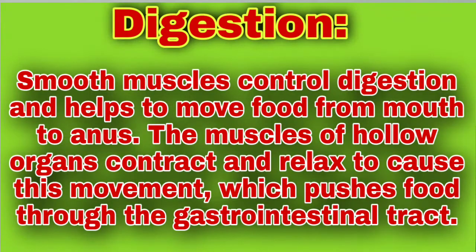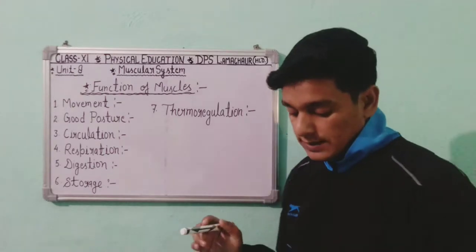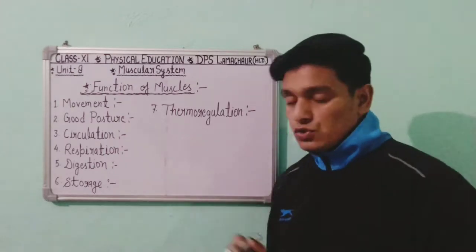The fifth function is digestion. Smooth muscles control digestion and help to move food from the mouth to the anus. The muscles of hollow organs contract and relax to cause this movement, which pushes food through the gastrointestinal tract.